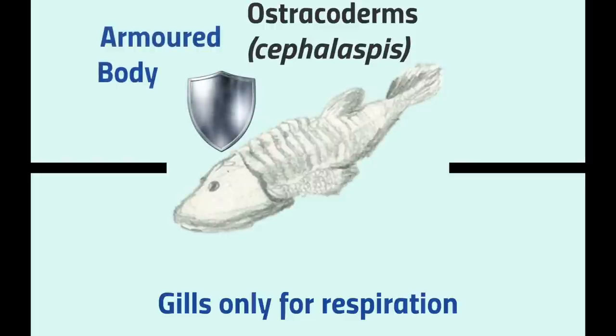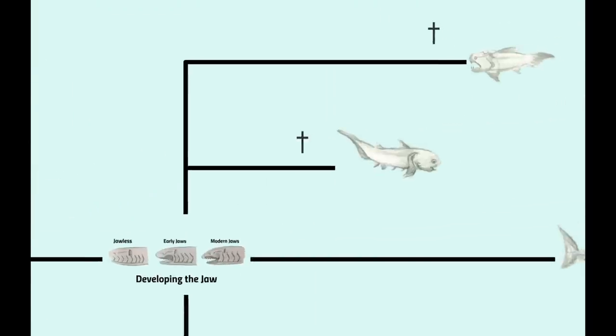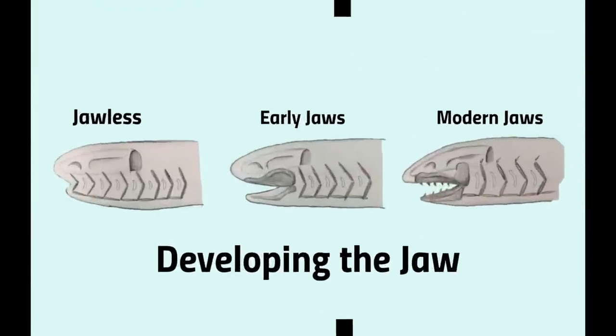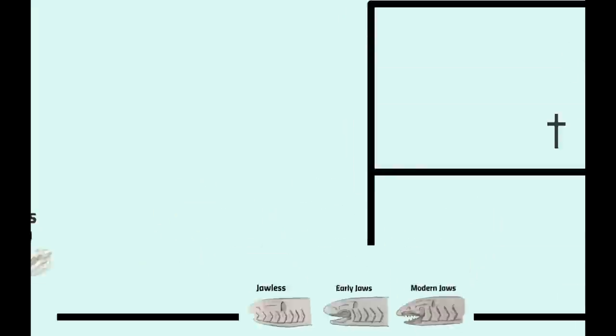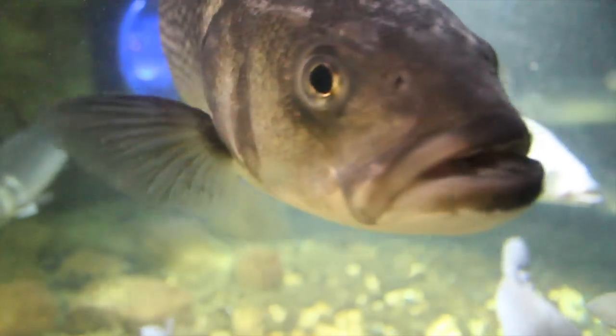Astracoderms differed from early fish as they used their gills exclusively for respiration and not feeding. They also had armored bodies which deterred their predators, and this meant that they were most likely slow-swimming bottom dwellers. Astracoderms also lacked jaws, which limited them to feeding on smaller, simple foods which they consumed through suction. The next major innovation seen in the evolution of fish is the development of the jaw, which first occurred in the late Ordovician.